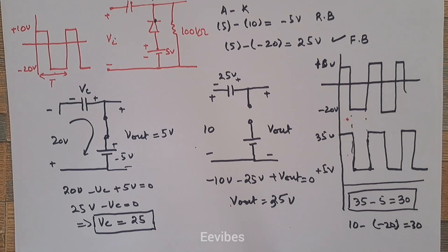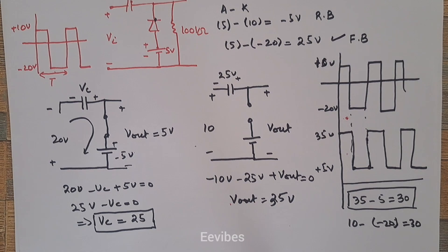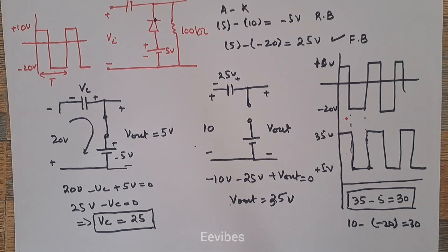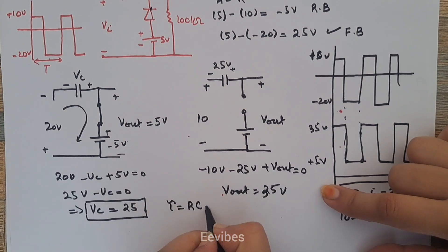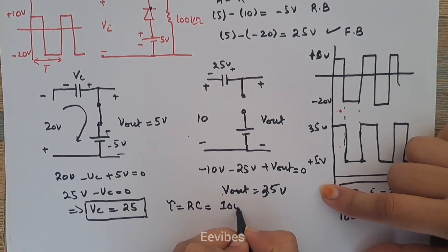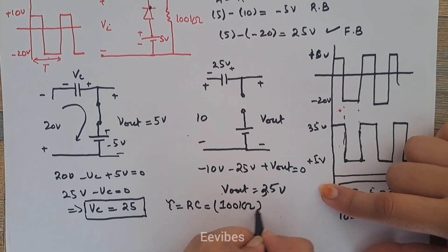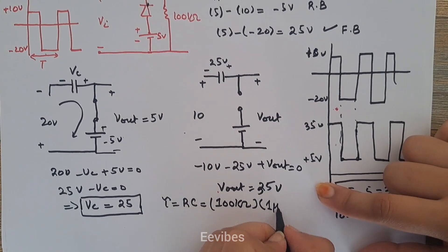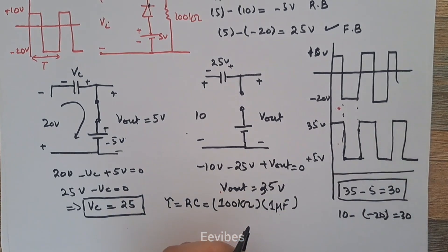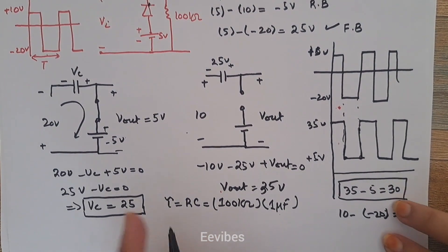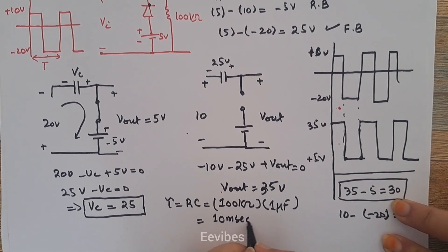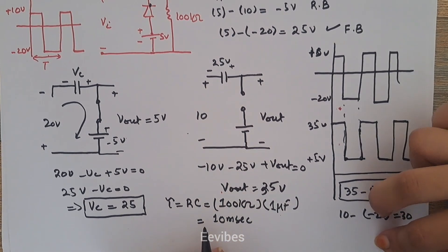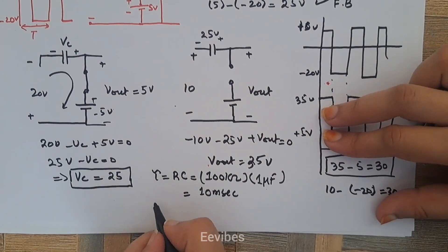Now let's evaluate the value of tau. Tau equals R times C, where R equals 100 kilohms and C equals 1 microfarad, so tau comes out to be equal to 10 milliseconds.